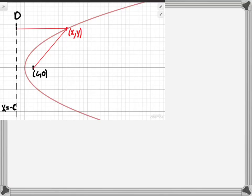If we label our points as D and F, and the point on the parabola as P, what we're saying is that the distance from the focus to P is the same as the distance from the directrix to P.